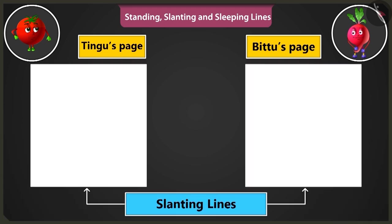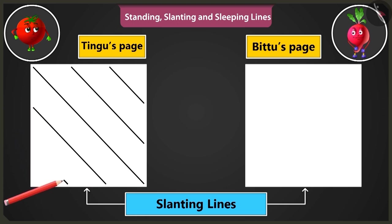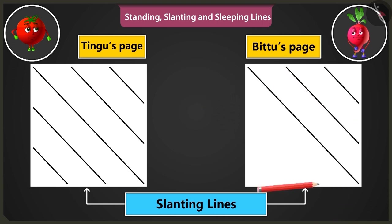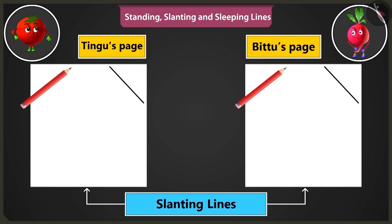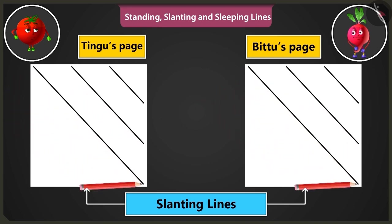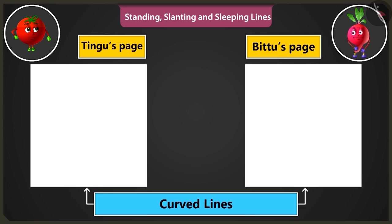Now the slanting lines have to start from the bottom right corner of the page. These lines are to be drawn from the right bottom to the top in this manner. See! Okay, I'll make it. Very good. Now slanting lines have to be drawn from the right side top to bottom, just like this. See! Wow, look at my slanting lines. Well done, Bittu.